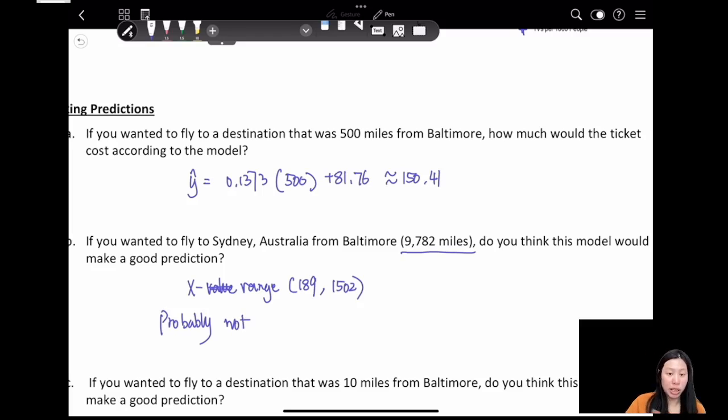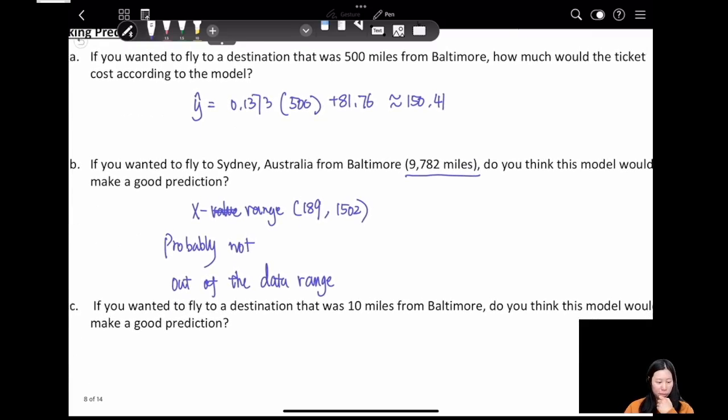The way that we explain this is because this is out of the data set range. When we generate the model, it's based on our data set, but the range of the data is from 189 to 1502. And if you wanted to fly to a destination that was 10 miles from Baltimore, do you think this model would make a good prediction? No, again it's the same reasoning - this is outside of our data set.